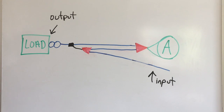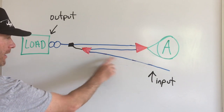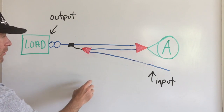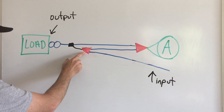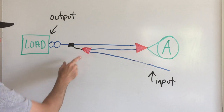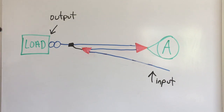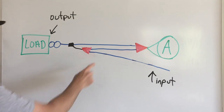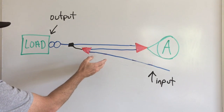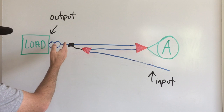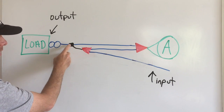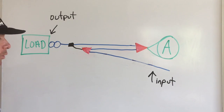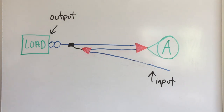Any time a rope — in this case the blue line — goes 180 degrees around through a pulley, whatever tension was on that rope is going to be multiplied by two on the other side of the pulley. That's a very, very important concept.